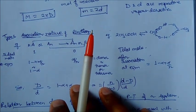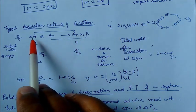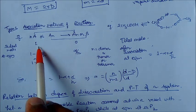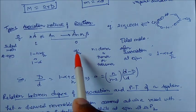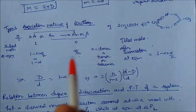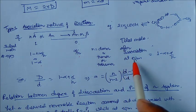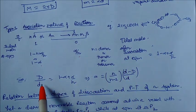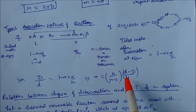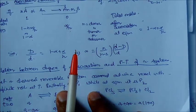In the second case, suppose an association reaction takes place: nA → Aₙ — the reactant is dimerized, trimerized, or polymerized. Initially moles = 1. At equilibrium: unreacted A = 1 minus alpha, associated product Aₙ = alpha/n. Total moles = (1 minus alpha) + alpha/n. So D/d = 1/(1 minus alpha + alpha/n), and solving gives alpha = n/(n-1) · (d minus D)/D.